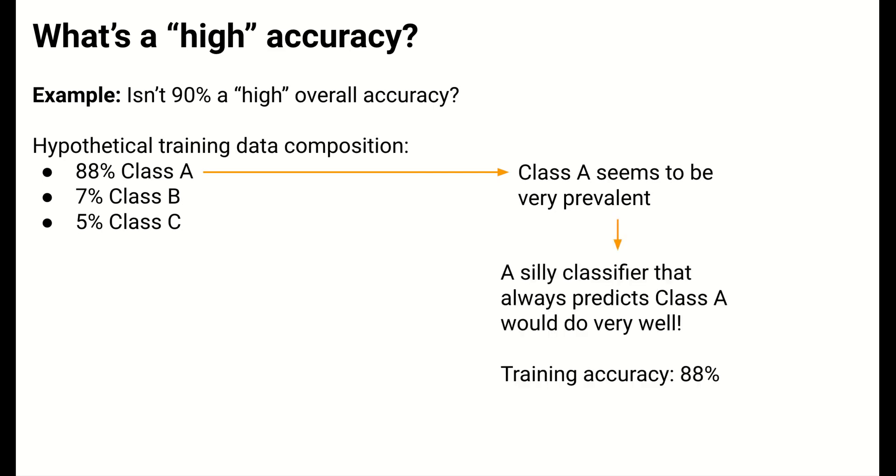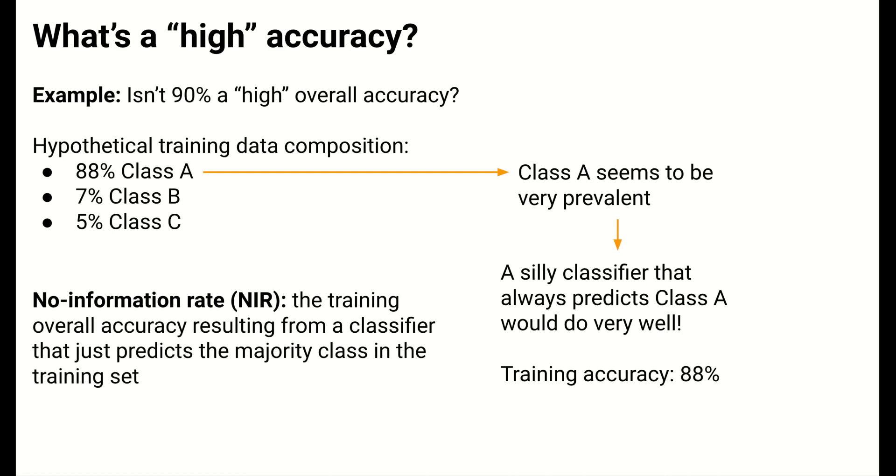In particular, if we made a silly classifier that just predicted the majority class in the training data, so a classifier that always just predicts class A, we'd likely just do well in general, because A seems to be so common. In particular, on the training data, our silly classifier would have an 88% overall accuracy. In particular, the overall accuracy on the training data resulting from a classifier that just uses the training set's majority class is often called the no information rate.